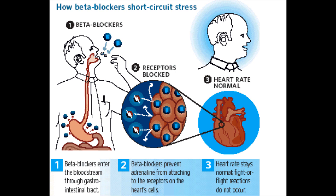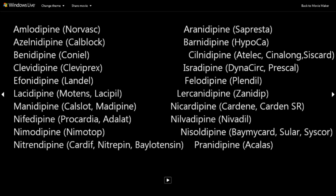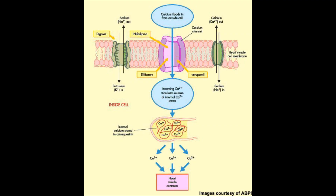For beta blockers: if a patient has asthma, you do not give beta blockers because of the beta-2 effect on beta-1 receptors. Calcium channel blockers inhibit calcium entry. They lower blood pressure; some also slow heart rate. Generics usually end in 'pine' — nifedipine (Procardia, Adalat), amlodipine (Norvasc) for blood pressure only. Diltiazem (Cardizem) and verapamil (Calan, Covera) lower both blood pressure and heart rate.